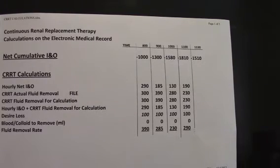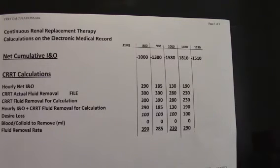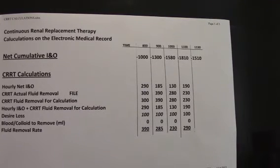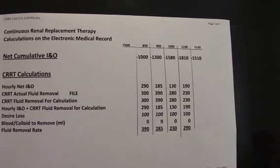I would like you to note that at 11:30, the intake and output net cumulative is now minus 1,510. I am speculating that maybe the doctor gave the patient a unit of blood — a packed red blood cell of 300 ml. Please check your doctor's order to determine. Rule number one is to always check with the doctor whether blood and colloids need to be calculated in the CRRT calculation. The majority of the time at our facility, the doctors do not want you to include this in the I&O — otherwise your fluid removal rate would include the 300 ml of packed RBCs, so instead of removing 290 ml at 11 o'clock, you would be removing 590 ml.